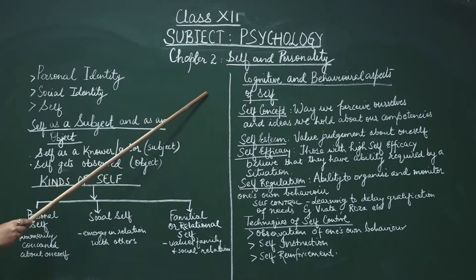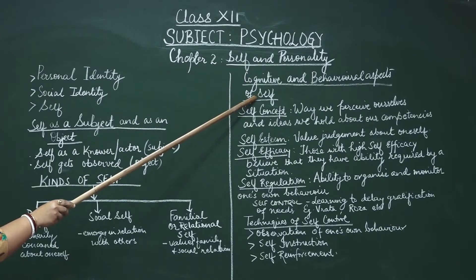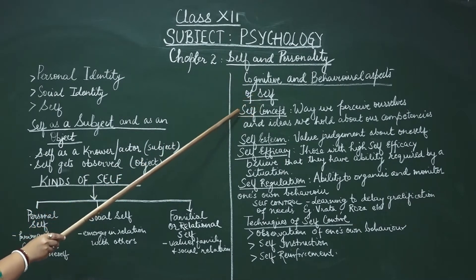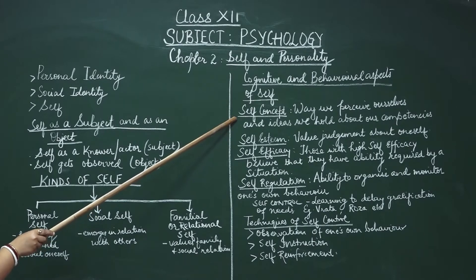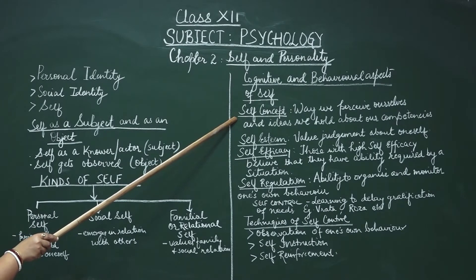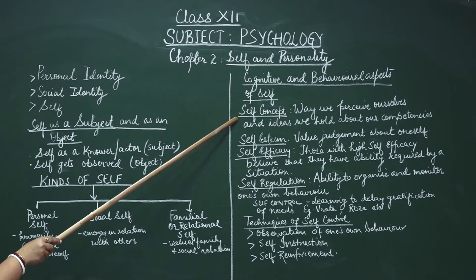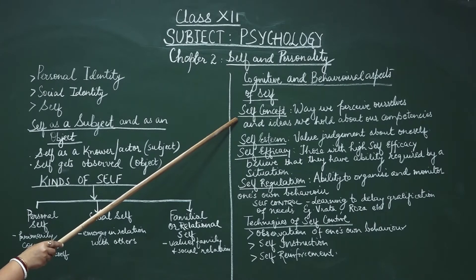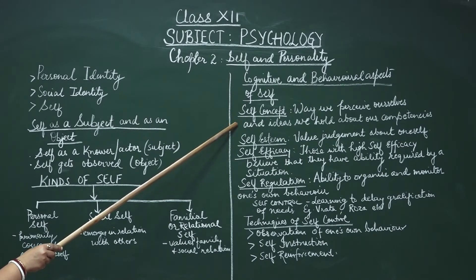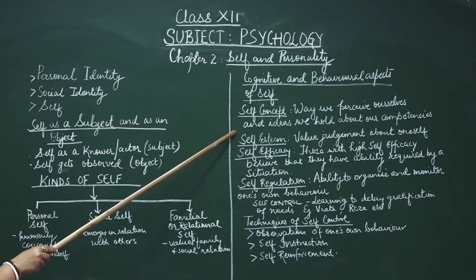Let's come to the cognitive and behavioral aspects of self. First, the concept of self-concept: the way we perceive ourselves and the ideas we hold about our competencies and attributes is known as self-concept. It can be both positive and negative. For example, about your academic talent you may have a positive self-concept, whereas regarding your athletic ability you may have a negative self-concept.